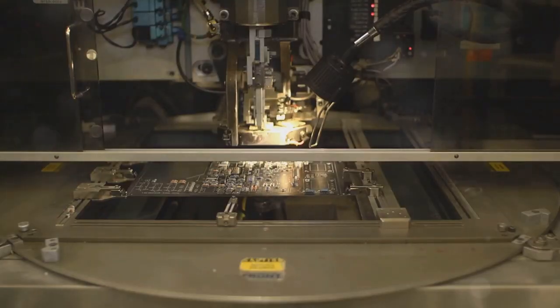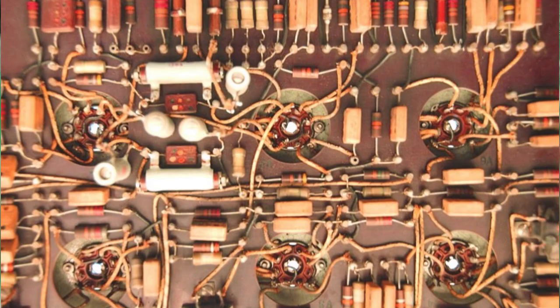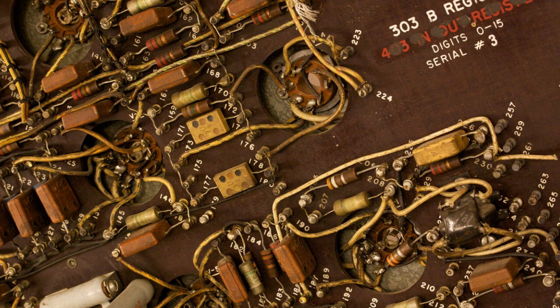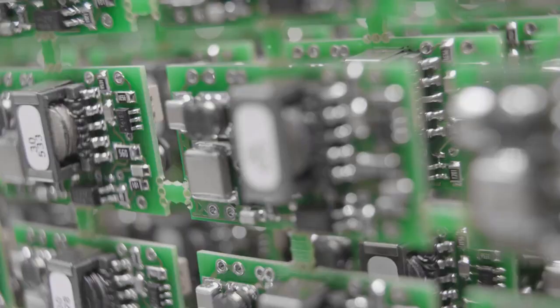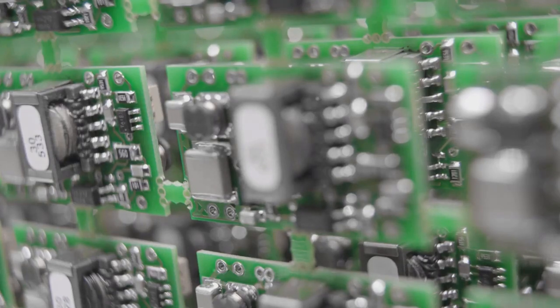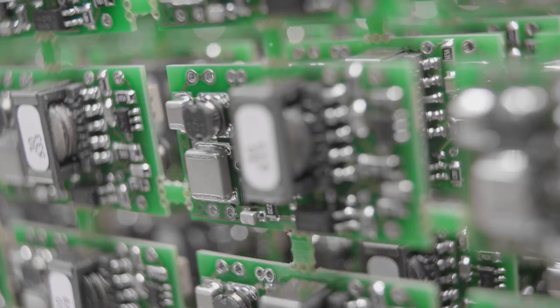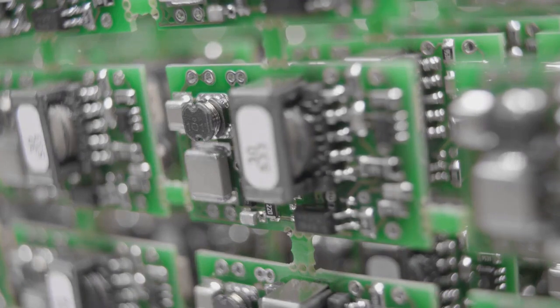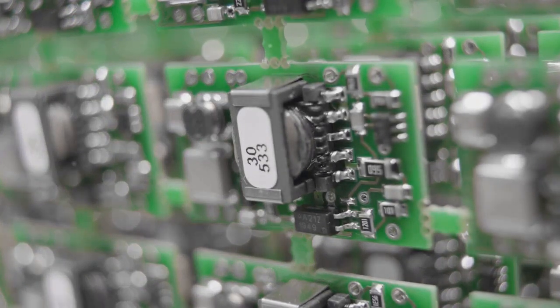As the demand for electronics grew, so too did the need for more efficient and reliable circuit board manufacturing methods. Companies began to specialize in the production of circuit boards, supplying them to manufacturers of radios, televisions and other electronic devices. These early circuit boards, while primitive by today's standards, represented a significant leap forward in electronics technology. They provided a more organized and reliable way to connect electronic components, paving the way for the development of increasingly complex and sophisticated devices.